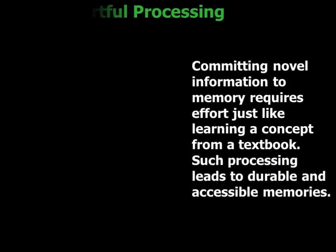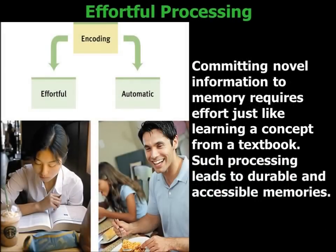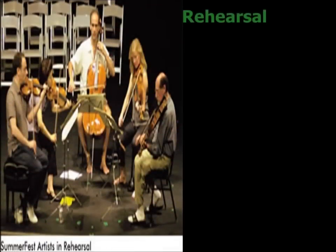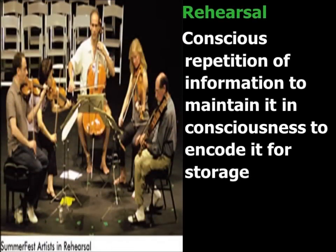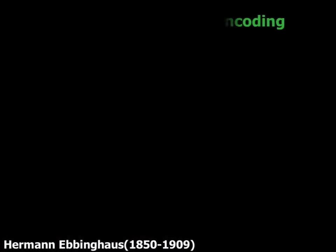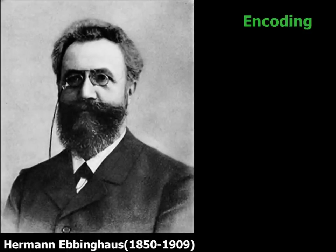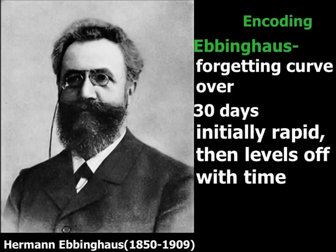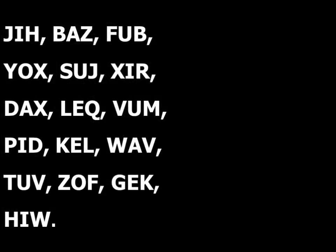When looking at memory, we examined echoic and iconic memory and short-term processes. Remember, in short-term memory the magic number is seven plus or minus two, and what that represents. We also looked at long-term potentiation and how that's the ability to increase a neuron's firing potential so it will fire more often.